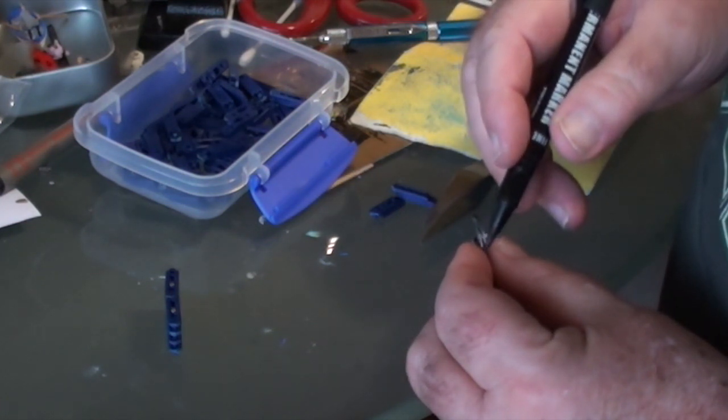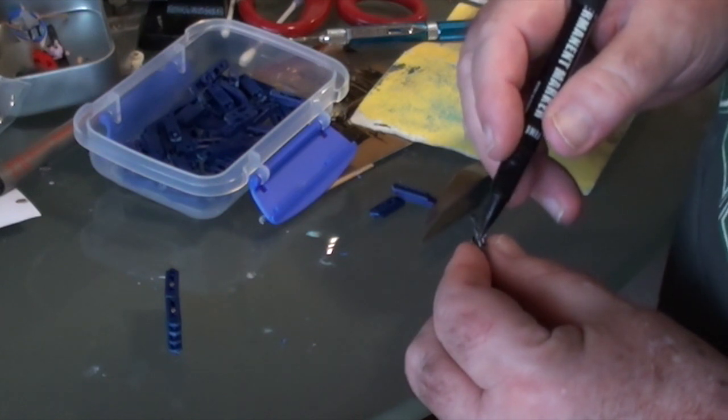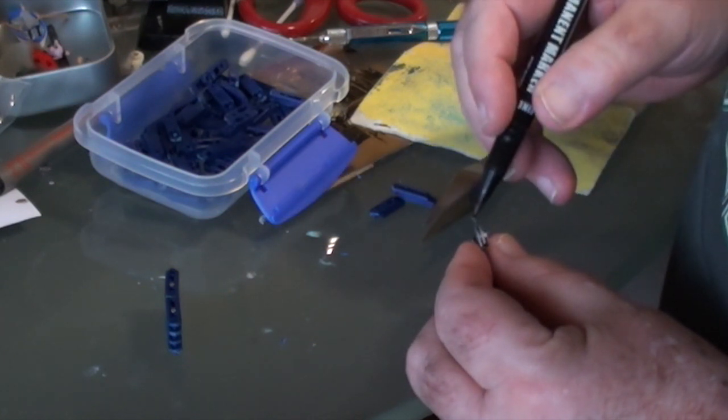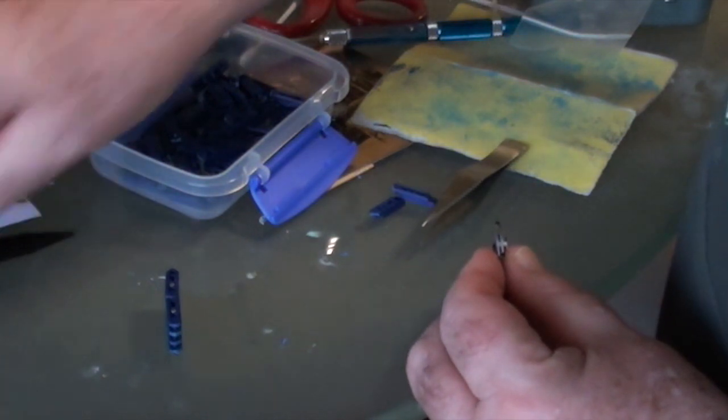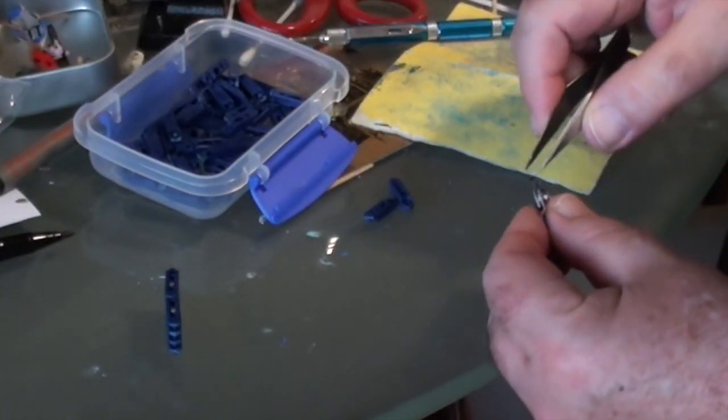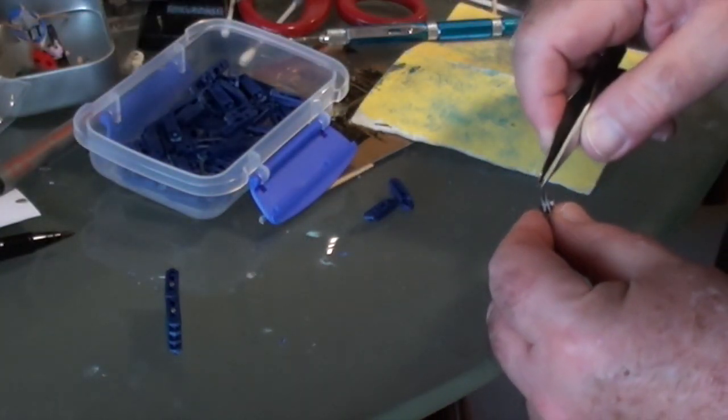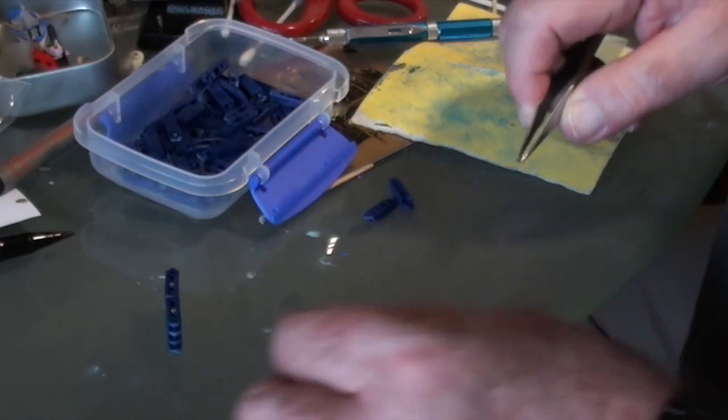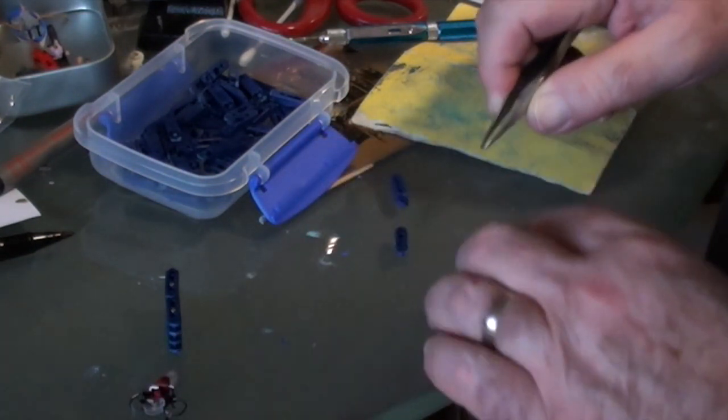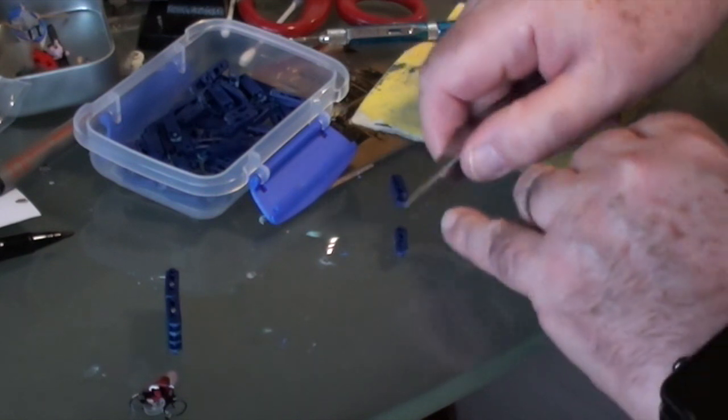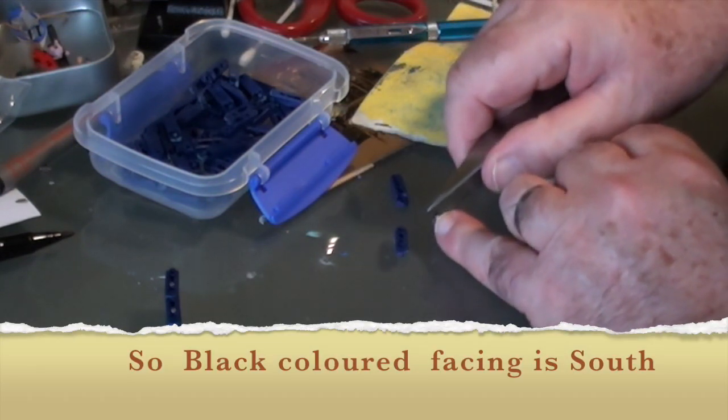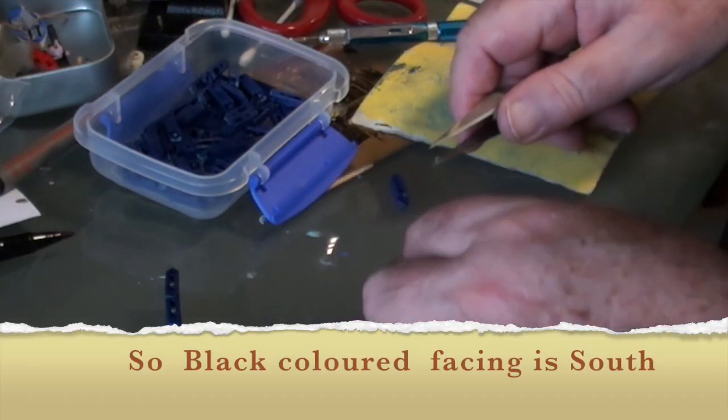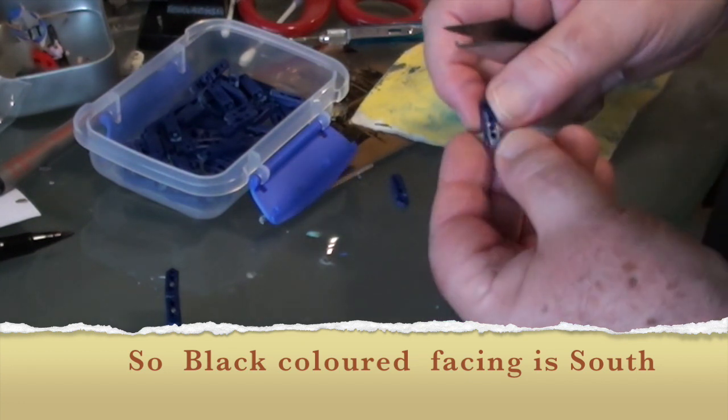All I'm doing is designating the polarity. So when I take the magnet off now, I know when I put that into a piece of track that the black bit has to be hidden.